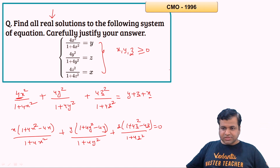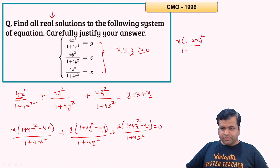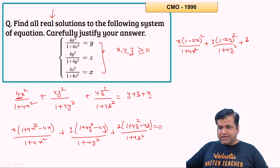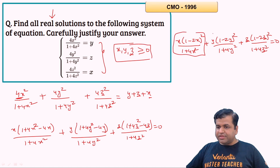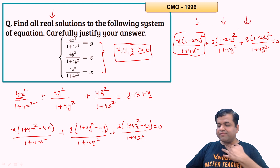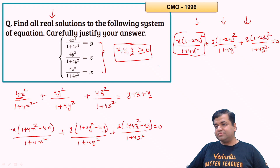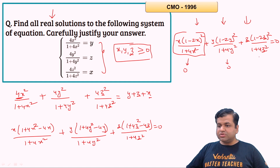Simplifying each term, we get x(1 − 2x)²/(1 + 4x²) + y(1 − 2y)²/(1 + 4y²) + z(1 − 2z)²/(1 + 4z²) = 0. We have already established that x, y, z are non-negative. So each term is non-negative. The sum of three non-negative terms equals 0 only when each term individually equals 0.